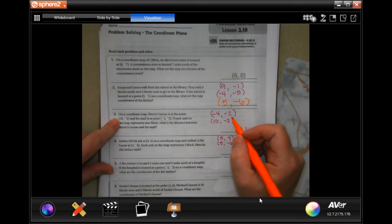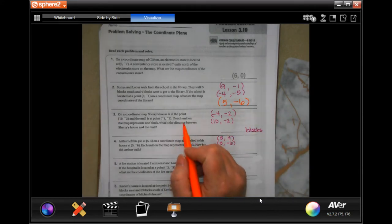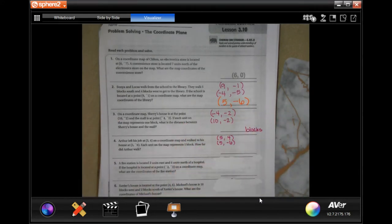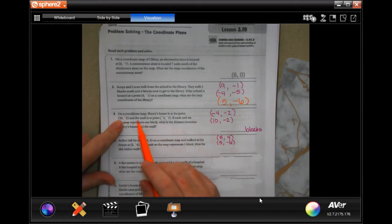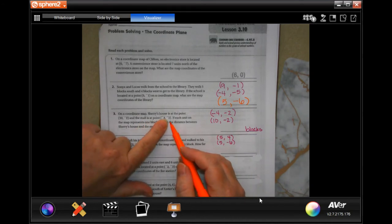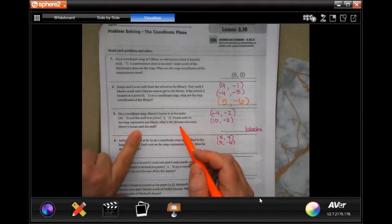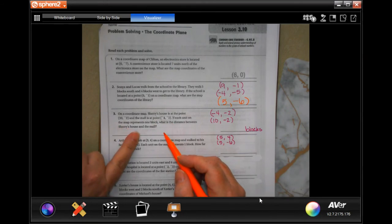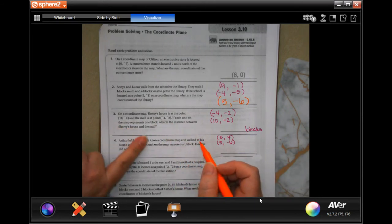On a coordinate map, Sherry's house is at the point of 10, negative 2, and the mall is at the point of negative 4, negative 2. If each unit on the map represents one block, what is the difference between Sherry's house and the mall?